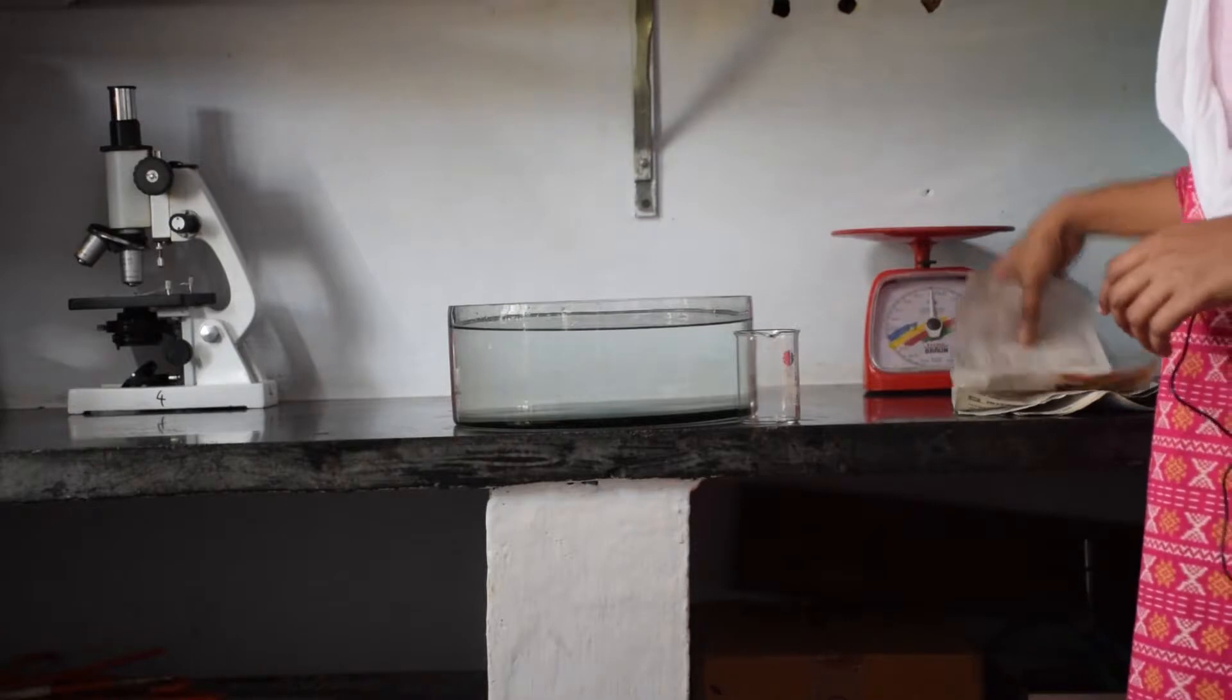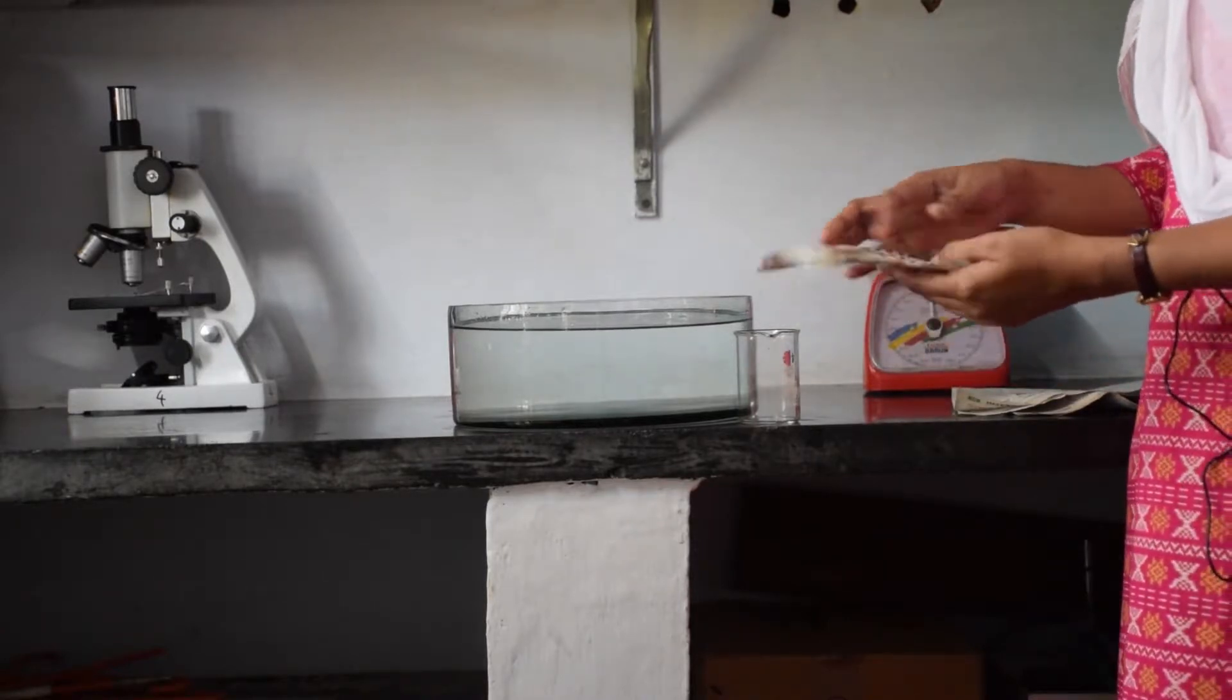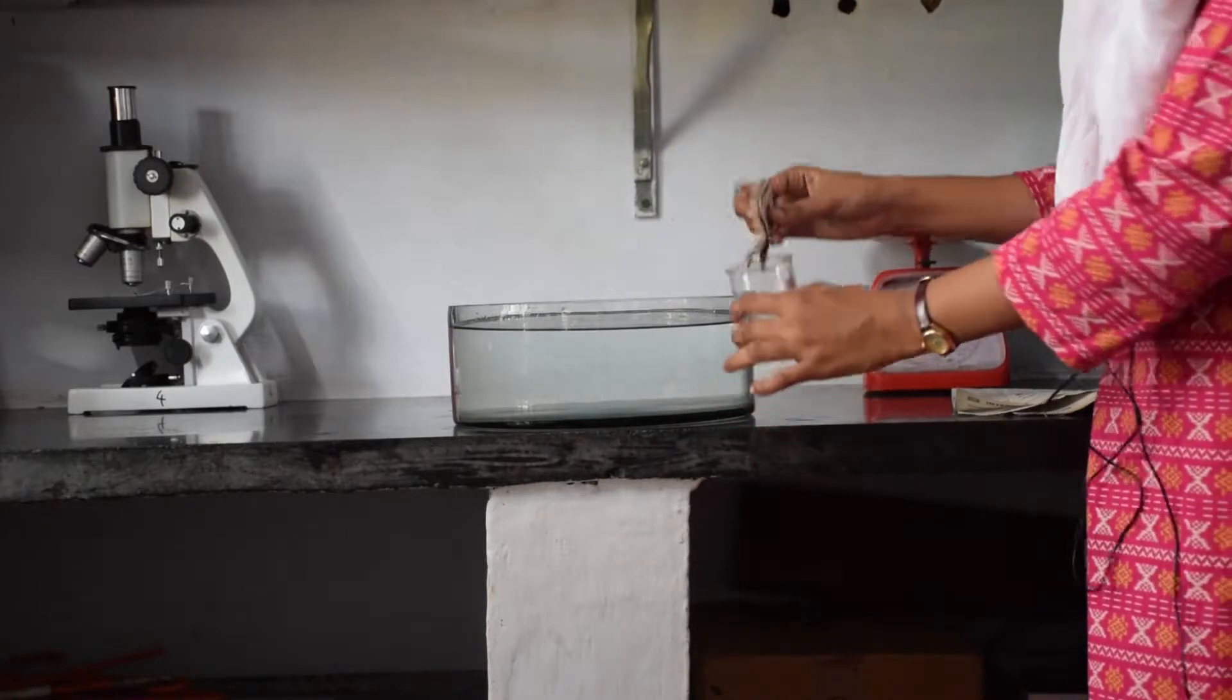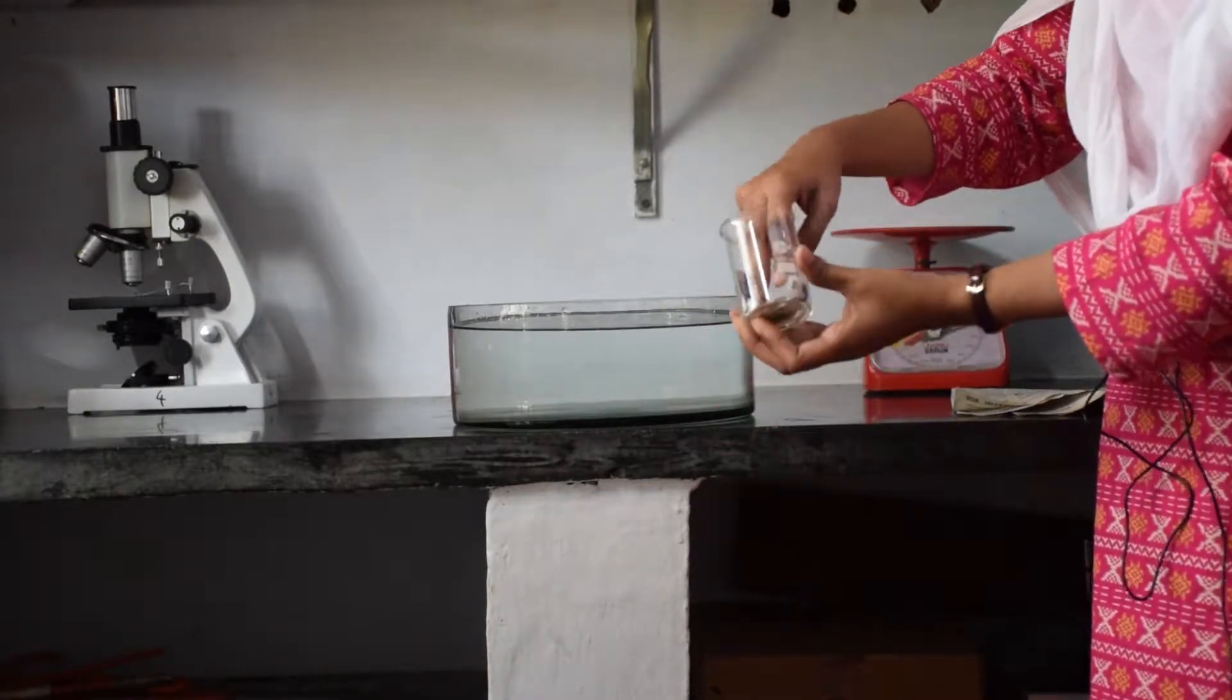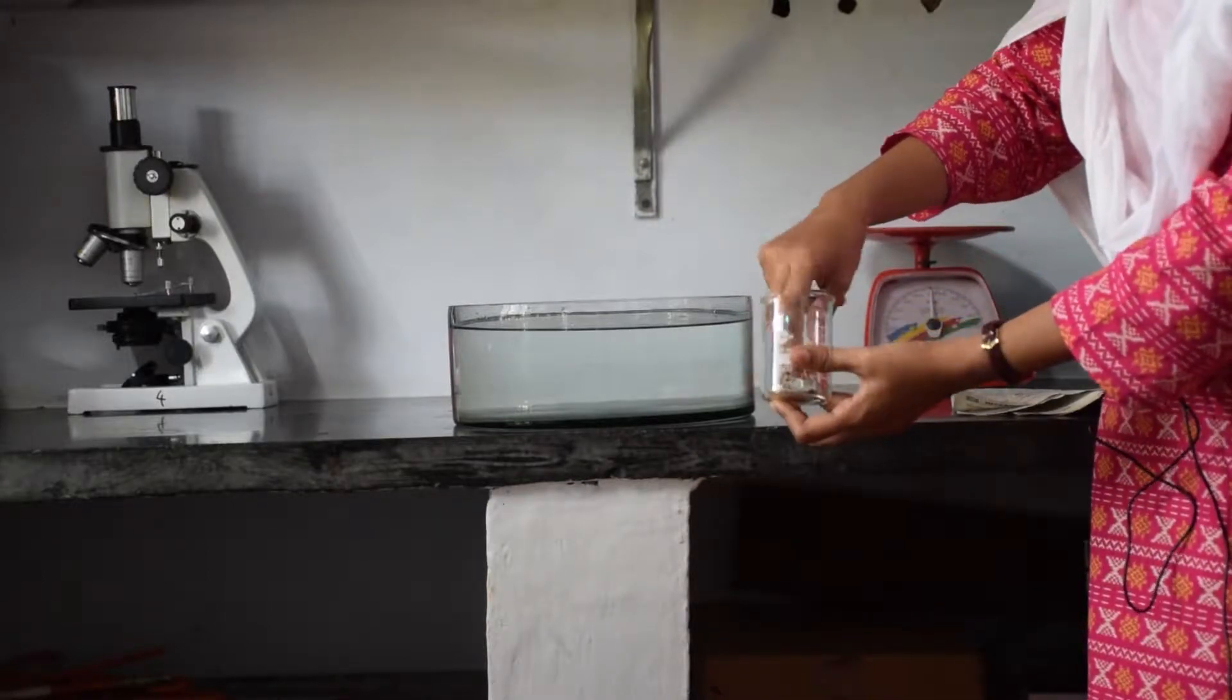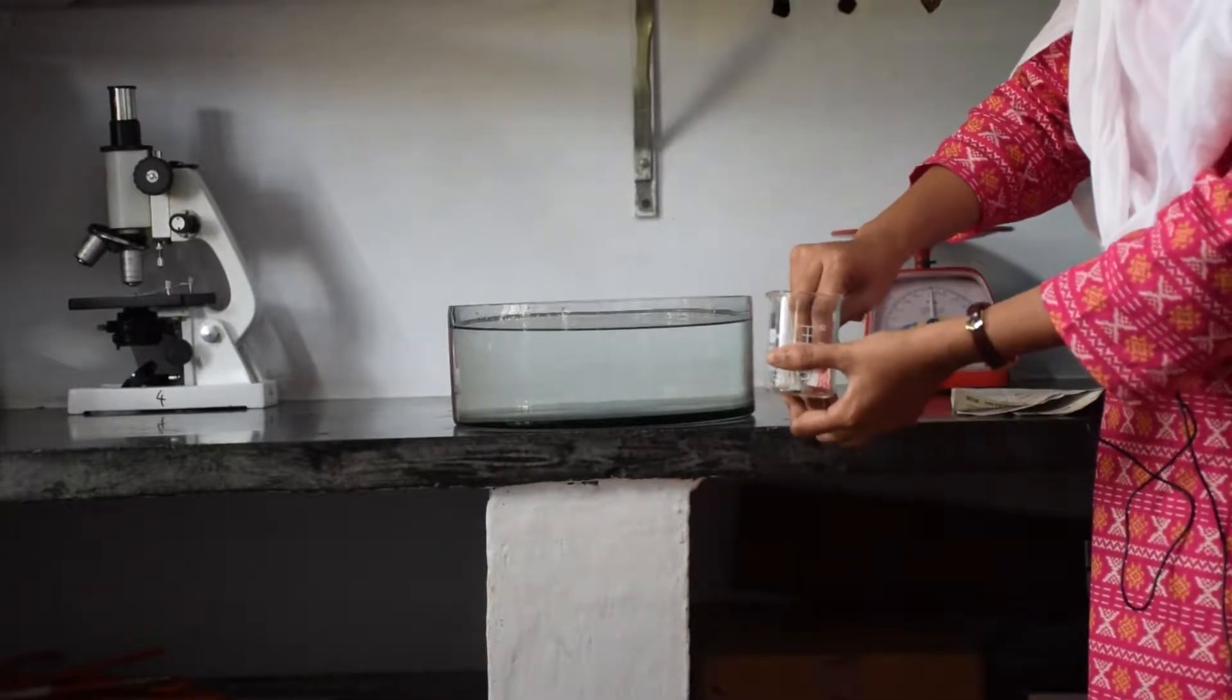We are going to take a newspaper, fold it and place it inside this glass. We are going to place it very tight so that it doesn't fall when inverted.